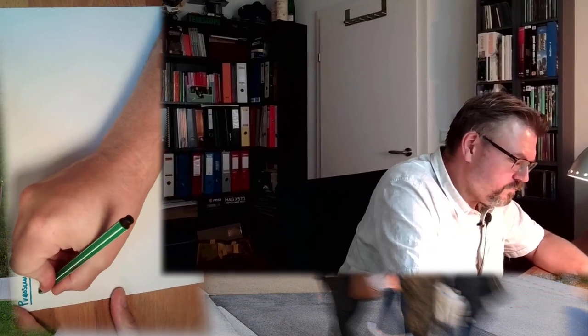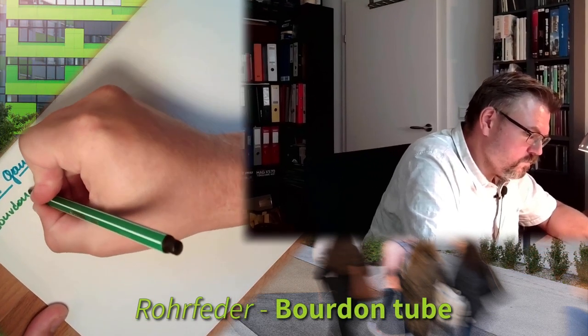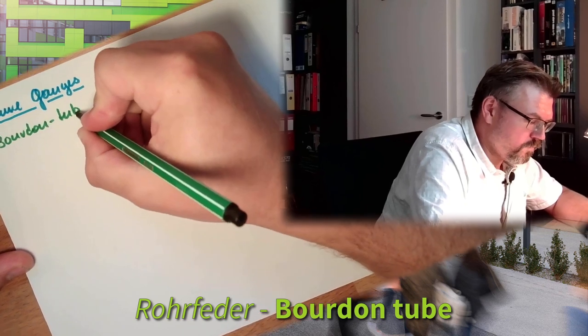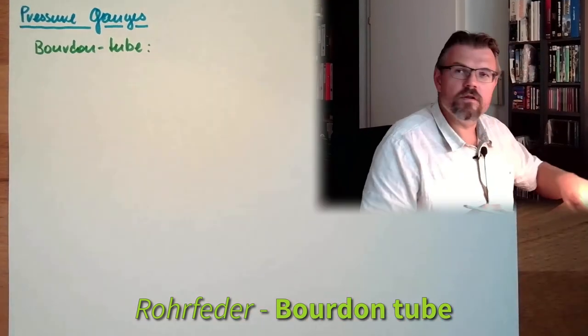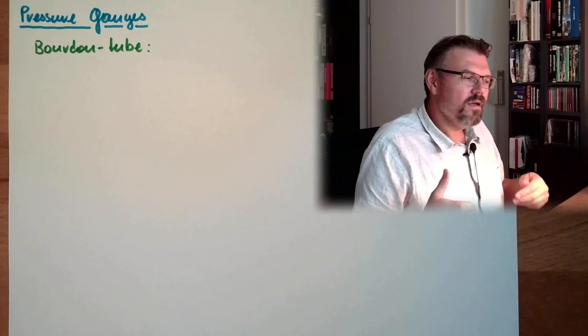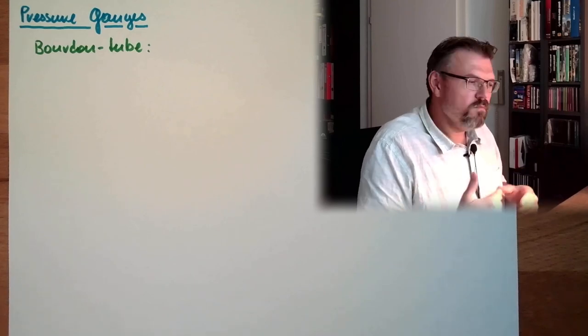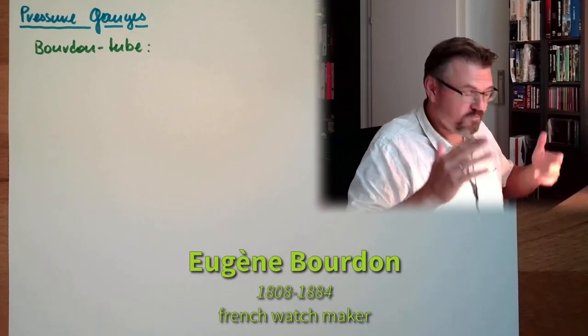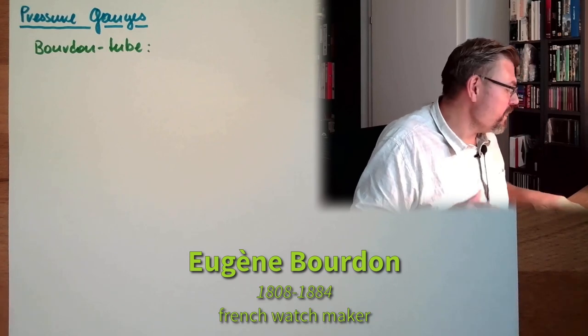So we have a Bourdon tube measurement. In German we call it Rohr-Feder-Manometer. It was invented by Eugene Bourdon, a French watchmaker, engineer.